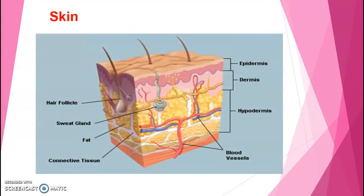The skin is the layer of usually self-repairing outer tissue covering the body of vertebrate animals, with three main functions: protection, regulation, and sensation. Other animal coverings such as the arthropod exoskeleton have different developmental origins, structure, and chemical composition.